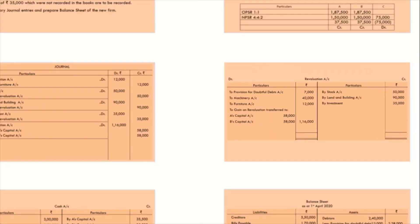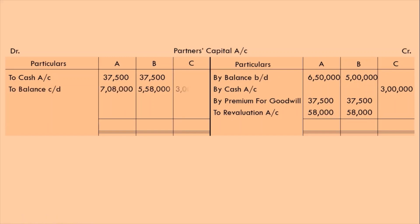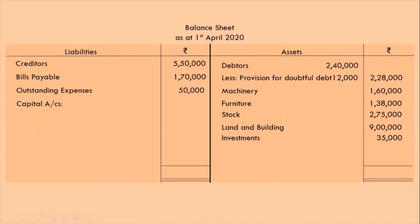Next, let's work on the partners' capital account. First transfer the gain on revaluation: by revaluation Rs 58,000 for A and Rs 58,000 for B. Then we will balance this account. For A: 6,50,000 + 37,500 + 58,000 − 37,500 = Rs 7,08,000. Likewise calculate for all partners and we get the closing balances: A's capital Rs 7,08,000, B's capital Rs 5,58,000, and C's capital Rs 3,00,000.